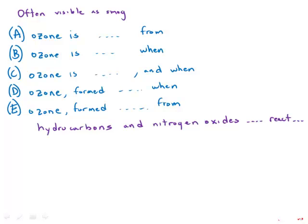Ozone is formed in the atmosphere from hydrocarbons and nitrogen oxides, major pollutants emitted by automobiles, react with sunlight.